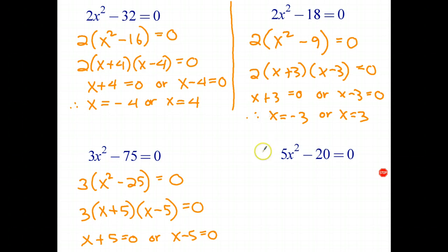And the final equation down here, very similar once again. We take out a common factor of 5, and that leaves x squared take 4 equals 0. Differences of squares. That becomes x plus 2, x take 2.